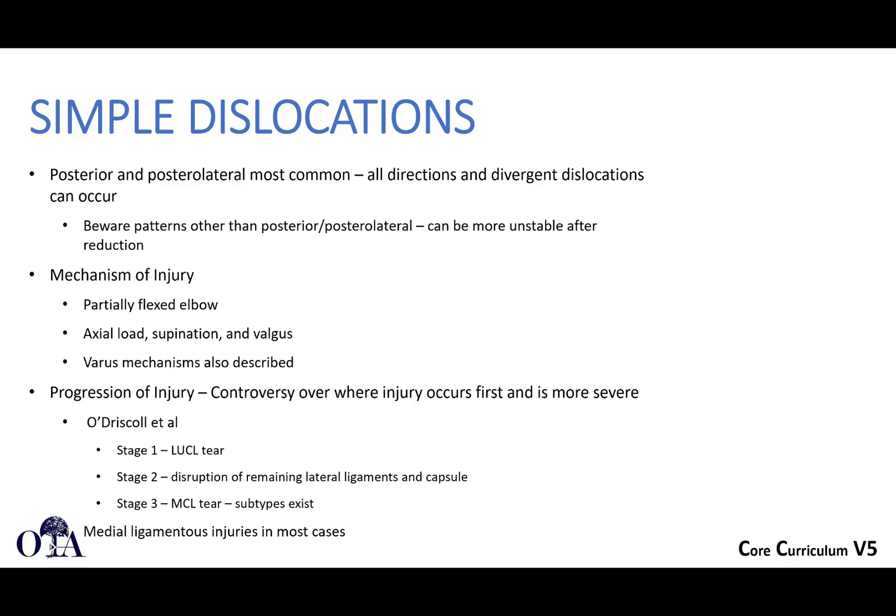Patients with chronic posterolateral rotatory instability may report pain when rising from a chair — placing hands on armrests creates supination, some valgus, and axial load. The pivot shift test in the clinic reproduces this mechanism of axial load, supination, and valgus; bringing the elbow to reduction produces the pivot shift. There is some controversy over where injury occurs first and is most severe; Sean O'Driscoll has done extensive work describing this pattern.